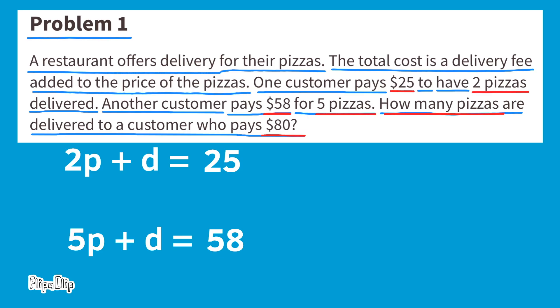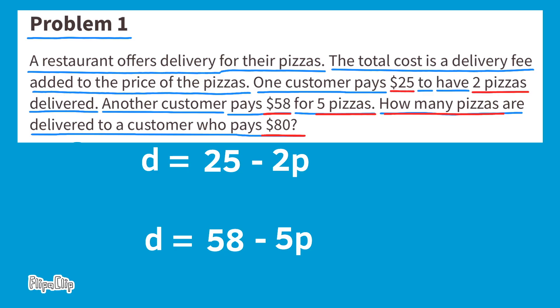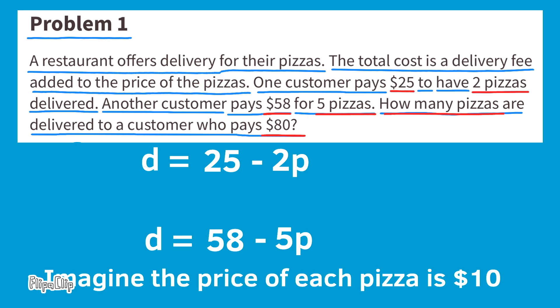Since the delivery fee is unknown, we need to isolate d. Rewriting: d equals 25 minus 2p, and d equals 58 minus 5p. Let's test p equals $10: two pizzas would be $20, five pizzas would be $50. So 25 minus 20 equals $5, and 58 minus 50 equals $8. The delivery fees don't match — $5 versus $8 — so the price of each pizza is not $10, because the delivery fee must be the same every time.